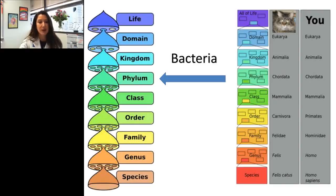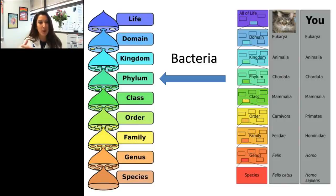To put taxonomic resolution in perspective: at the kingdom level we see bacteria; phylum is just below that. To differentiate between ourselves and the common house cat, you'd have to move down to the order level — so many of these comparisons have revealed very distinct microbiomes at a very high taxonomic level.